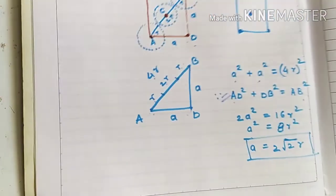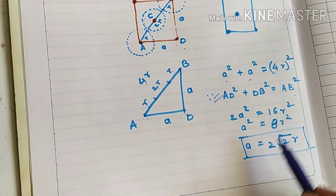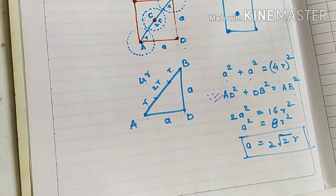So a would be equal to 2 root 2 into r. A square is 8r square. So taking square root on both the sides, a equal to 2 root 2 into r. Thus for FCC structure, lattice parameter a is equal to 2 root 2 multiplied by r.